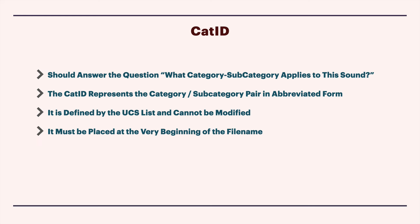At the head of the file, we're going to put the cat ID, which answers the question: what category and subcategory applies to this sound? The cat ID represents the category and subcategory in abbreviated form. We're not going to type the full category and subcategory at the beginning of the file name. Our goal is to keep the file name length somewhat manageable, which is why we use this cat ID.